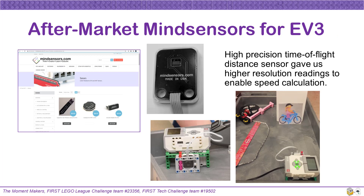As we tested our prototype, we found that the standard EV3 ultrasonic sensor could not measure speed as well as we needed it to. However, there are aftermarket companies, such as MindSensors, that sell products that will work with LEGO robotic systems. These aftermarket parts are not legal for the robot game, but they can be great for project prototypes. We ordered a high-precision time-of-flight distance sensor from MindSensors, which also has pre-made blocks for the special parts that can be imported into the EV3 lab software. We could then calculate speed at higher precision and analyze the results with our EV3.